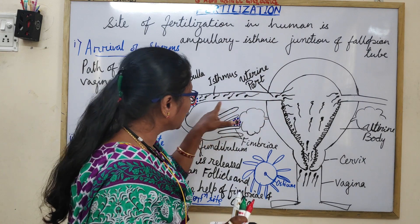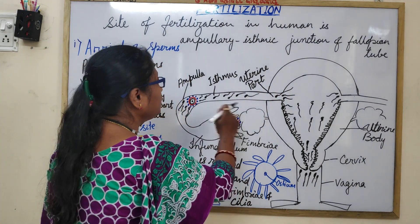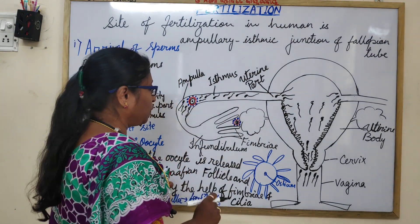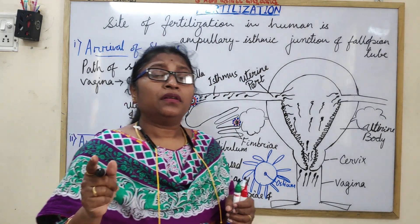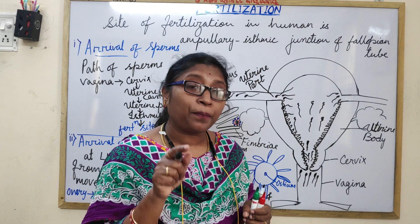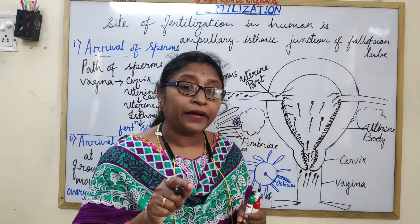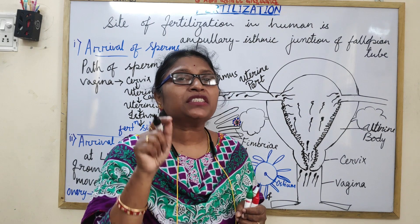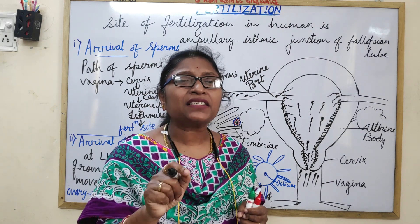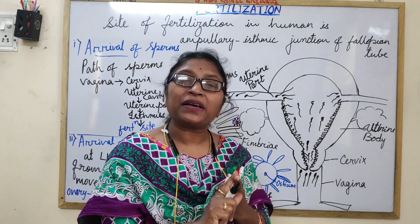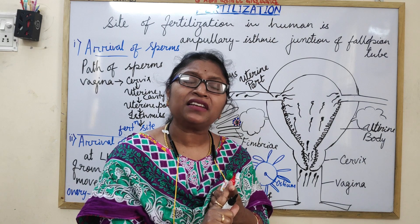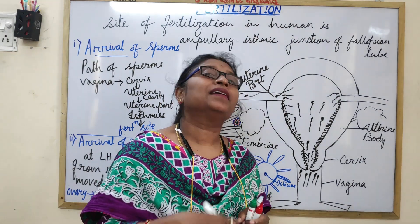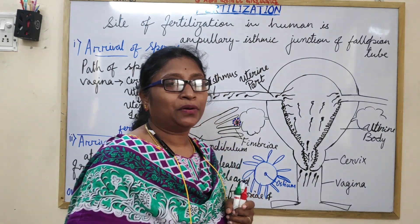While passing through the uterine tube, the sperms are being capacitated. The particular sperm that can fertilize the oocyte must have undergone two specific reactions: capacitation and the acrosome reaction, which will be studied in the next session.